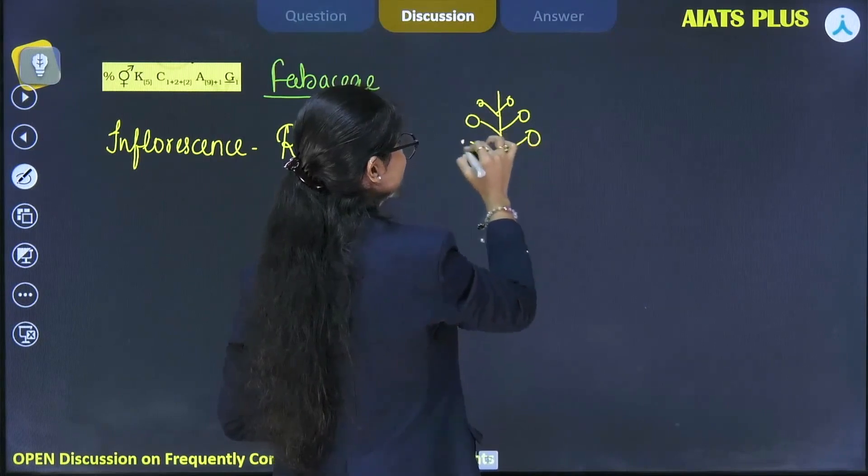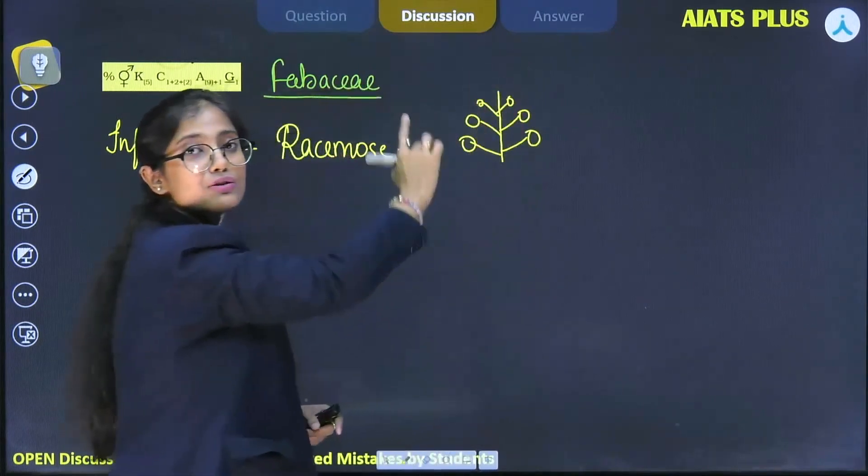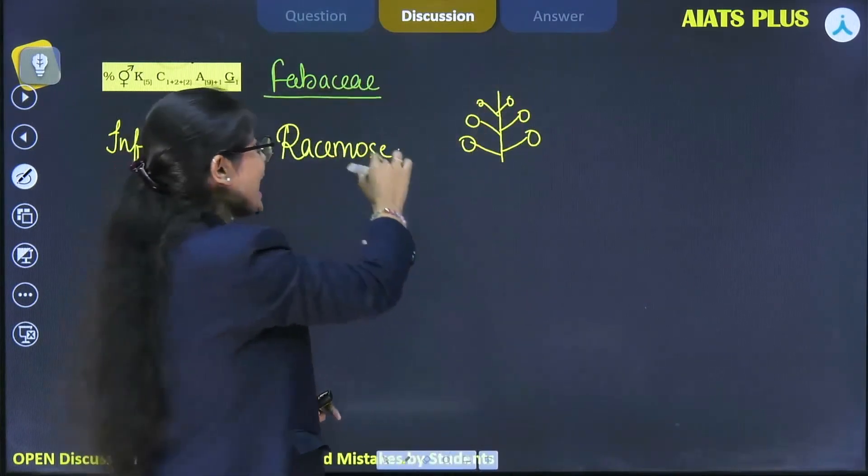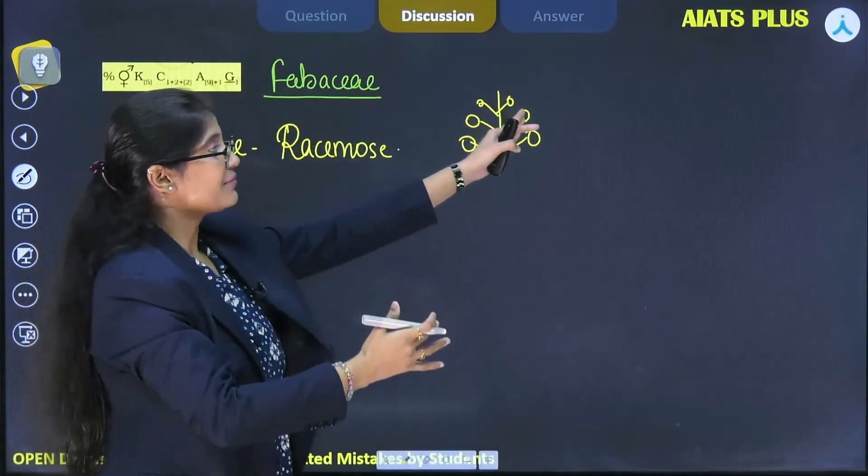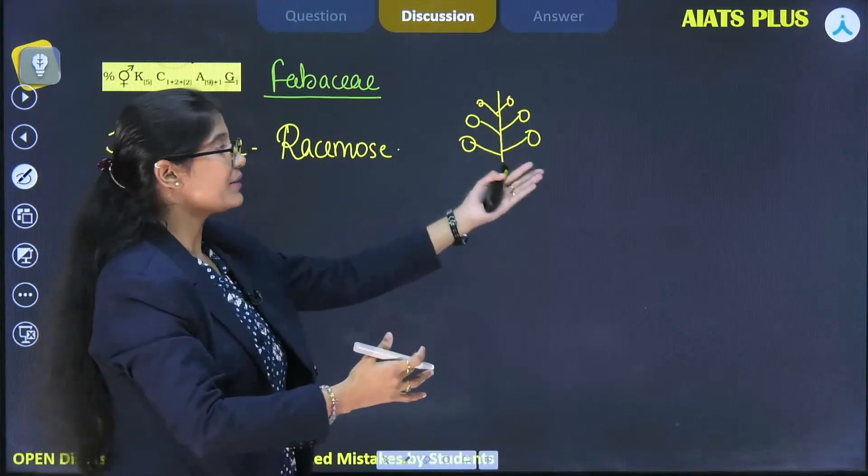This type of arrangement of flowers - younger flowers towards the tip and older flowers towards the base - is known as acropetal succession.